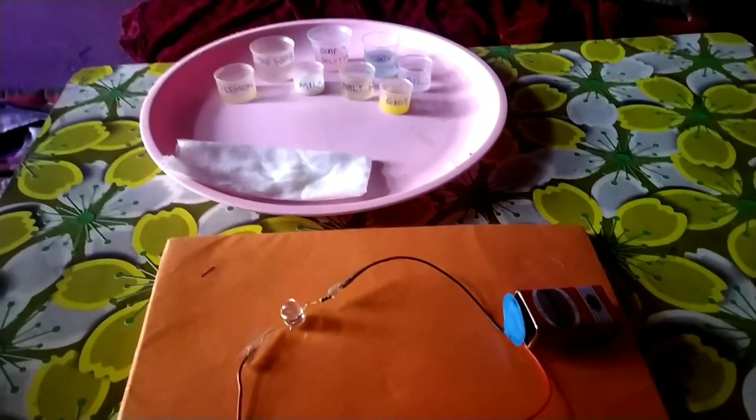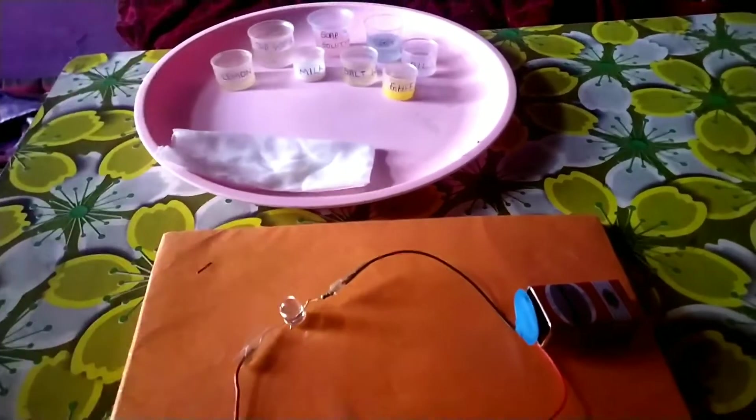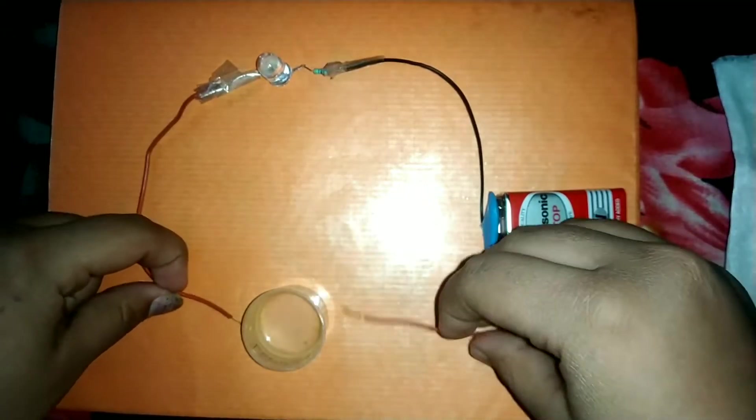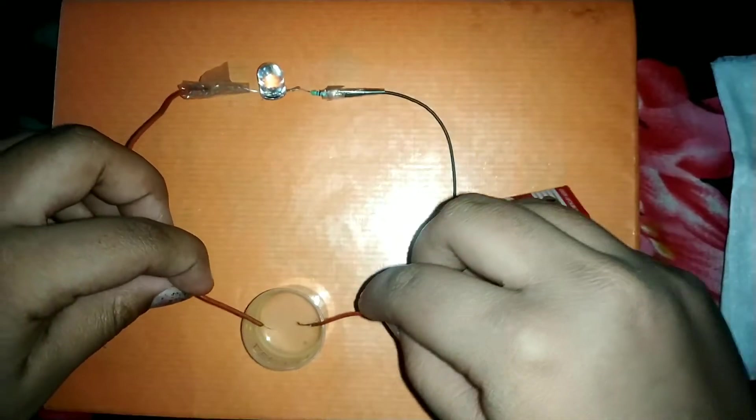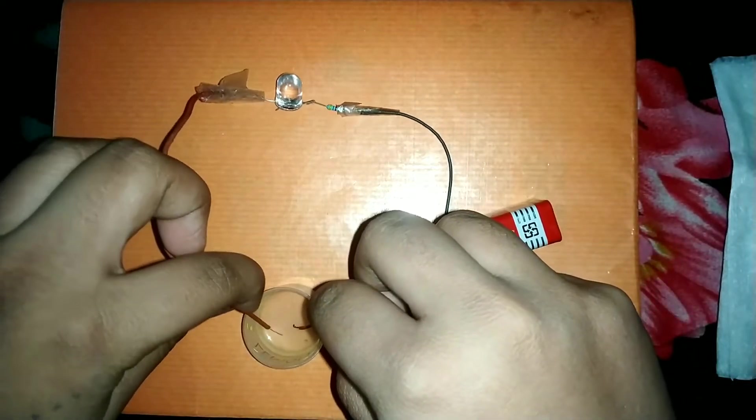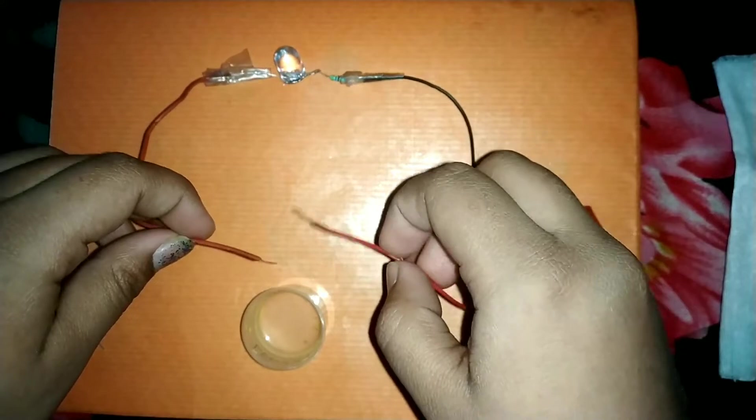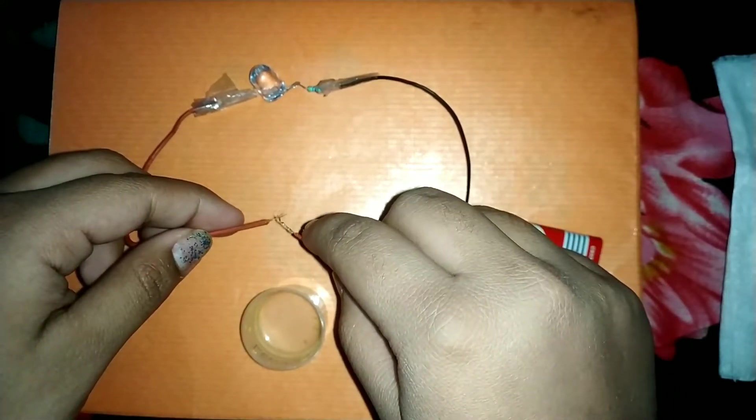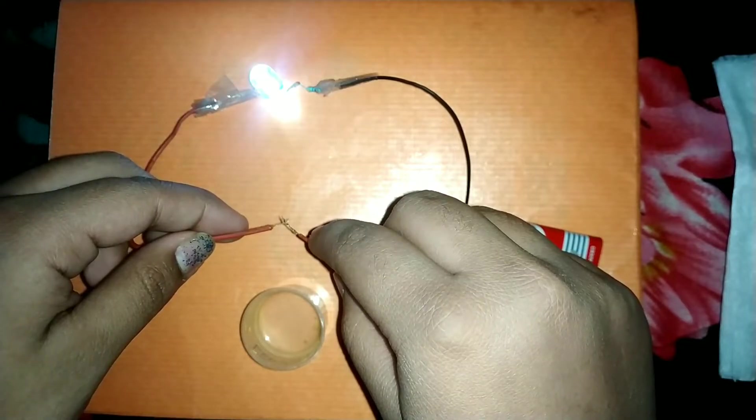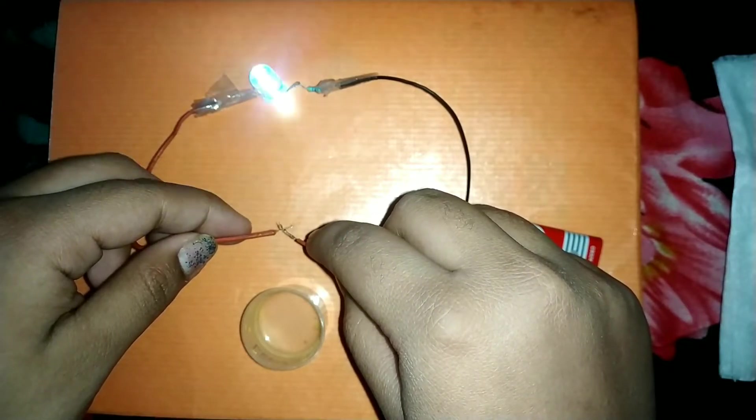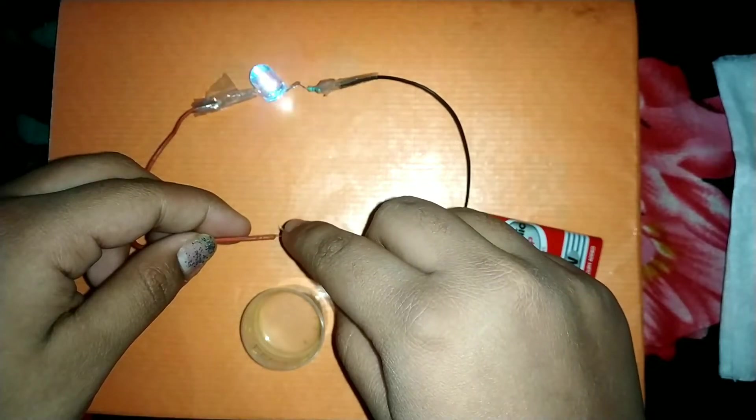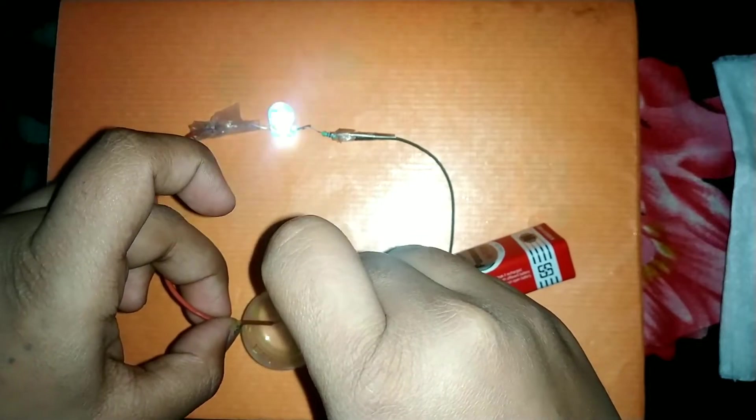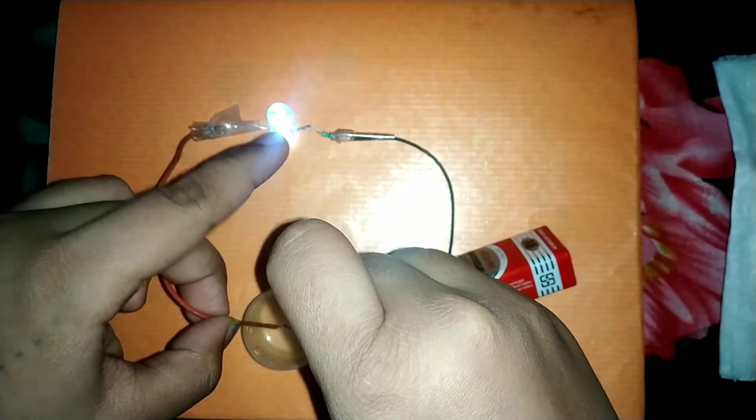Now we will see which of these solutions allow electrical conductivity to pass through them. I will try with the lemon juice. I will dip the wire in the lemon juice. Before that, one thing we should keep in mind is that we do not touch the wires with each other because the circuit will be complete and the bulb will glow. The two wires should be a little bit far from each other. Then I will dip it and you can see the bulb glows.